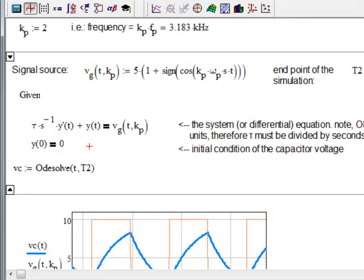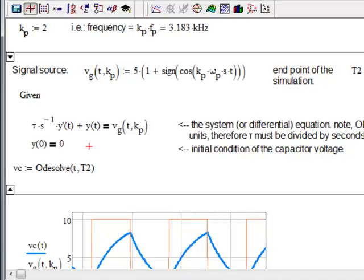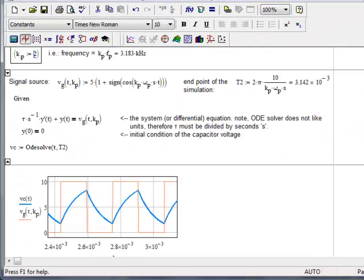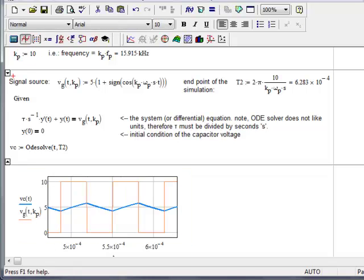So we can see this in action. If I change, for instance, I guess I better make it smaller here. Kp just changes the frequency at which I drive my square wave. So if I change this from 2 to 10, there, it re-simulated it.